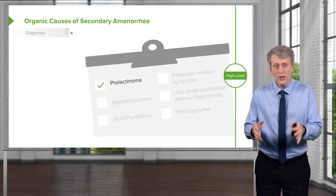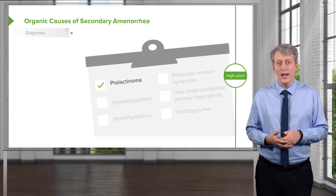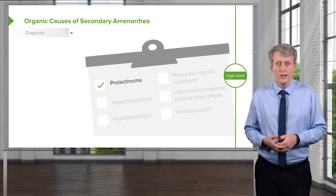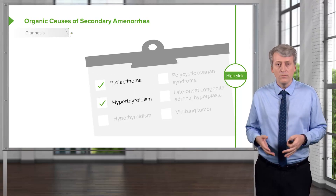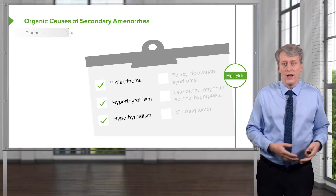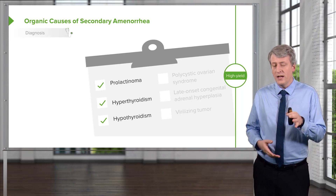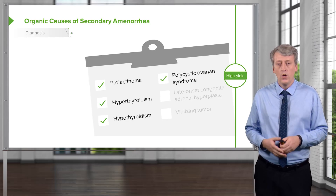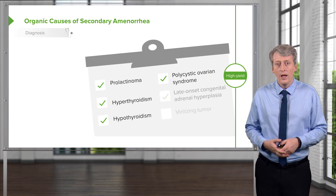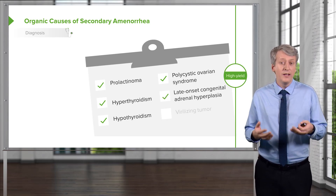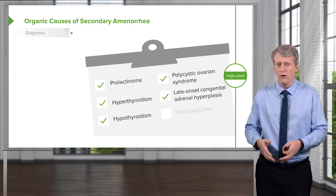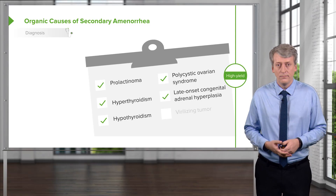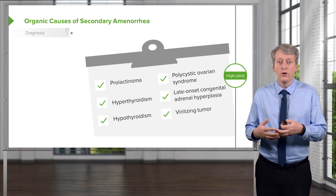The organic causes of secondary amenorrhea include a prolactinoma in the pituitary gland, hyperthyroidism or hypothyroidism, and polycystic ovarian syndrome, which we'll discuss further. Additionally, patients may have late-onset congenital adrenal hyperplasia — rare, but suspected in a patient with a large clitoris — and rarely, virilizing tumors.